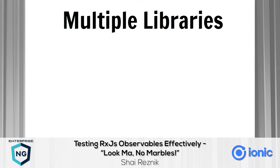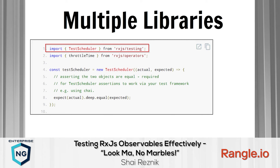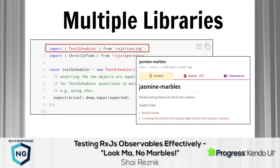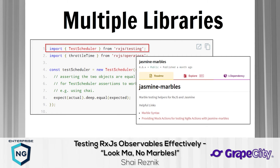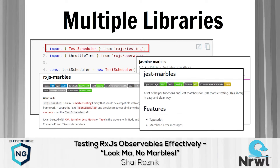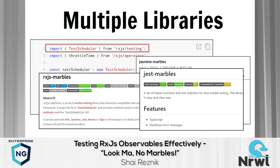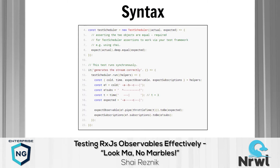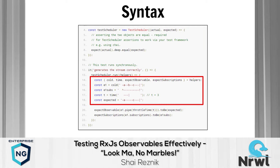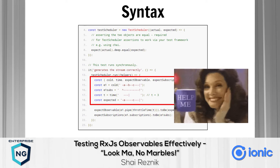I Googled how to test observables and everything I found was about marble tests. With marble testing I ran into four main issues. First, there were multiple libraries: the official RxJS test scheduler, Jasmine Marbles from the official Angular and NgRx documentation, plus RxJS Marbles and Jest Marbles. Each library had its own API and I got confused. Second was the syntax — a cryptic language — and when I first looked at it I was lost.